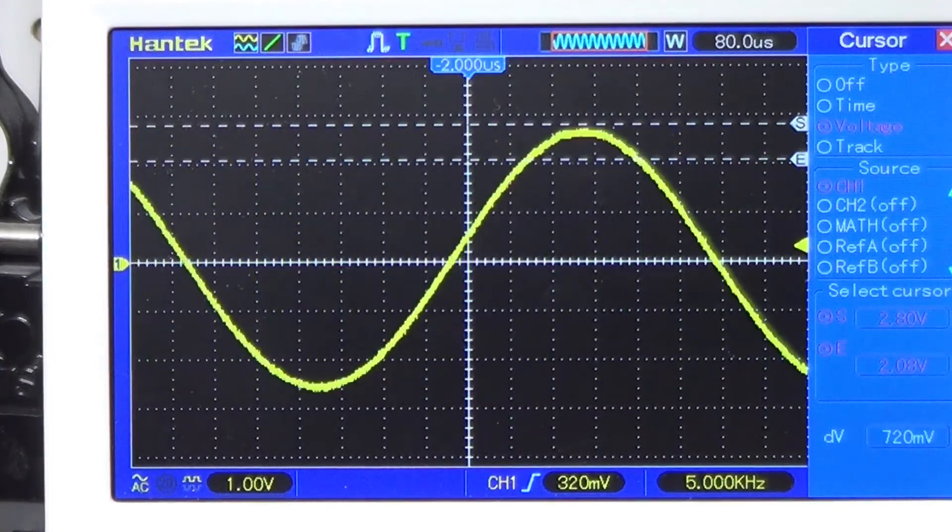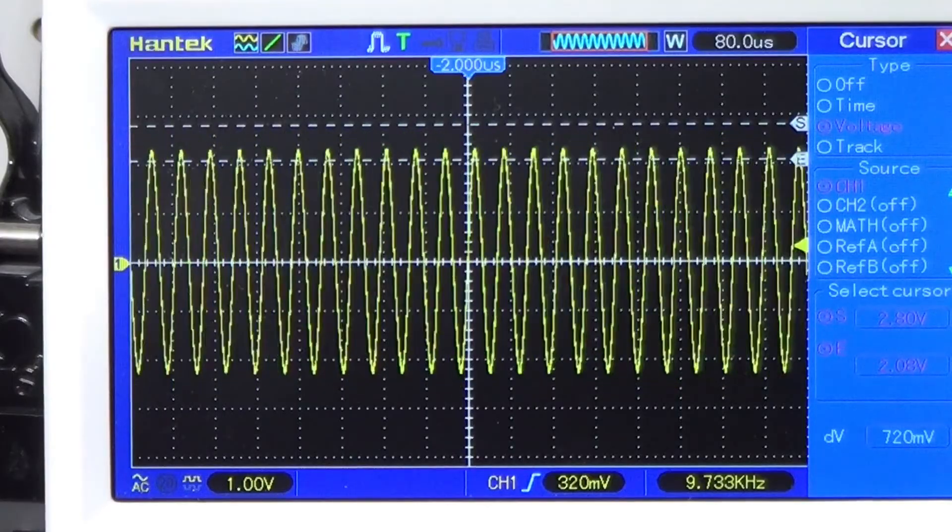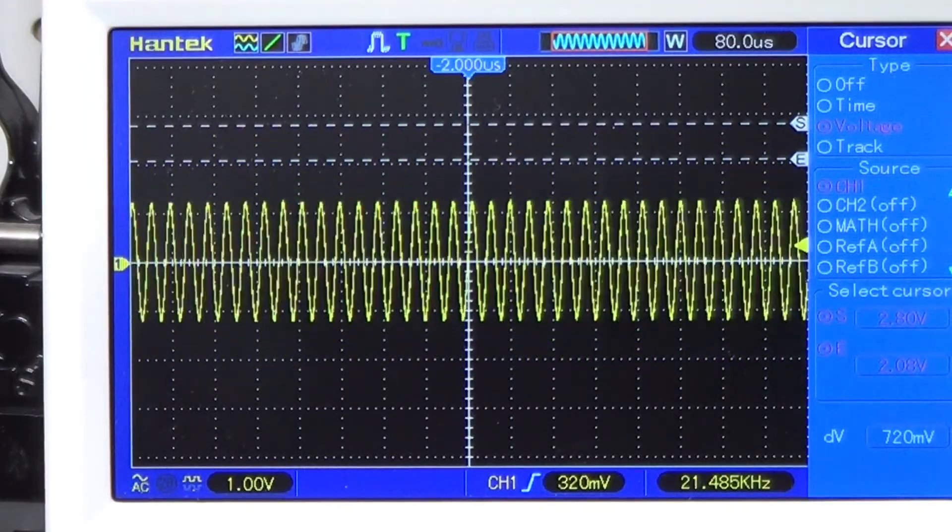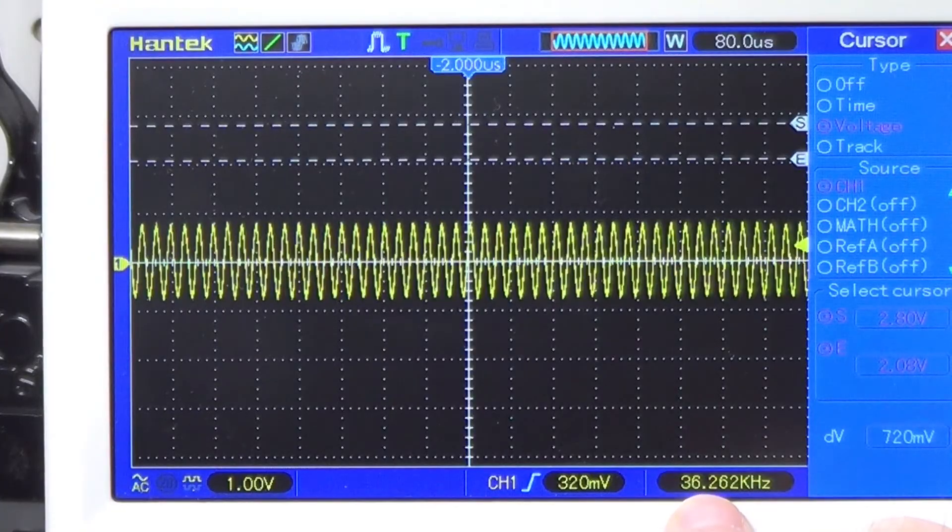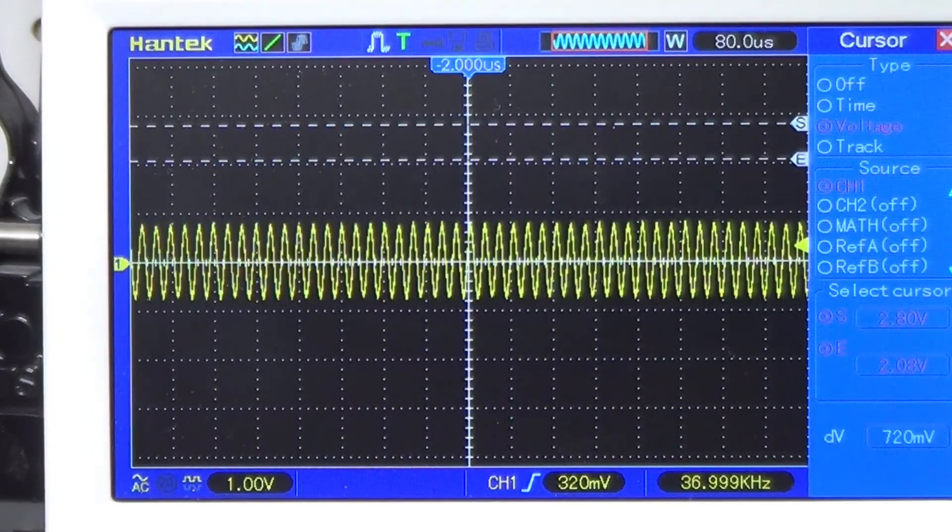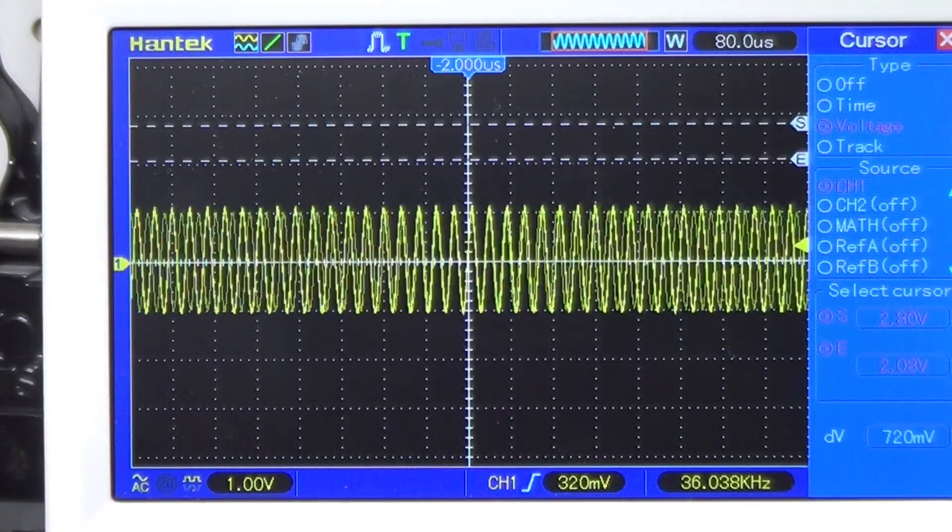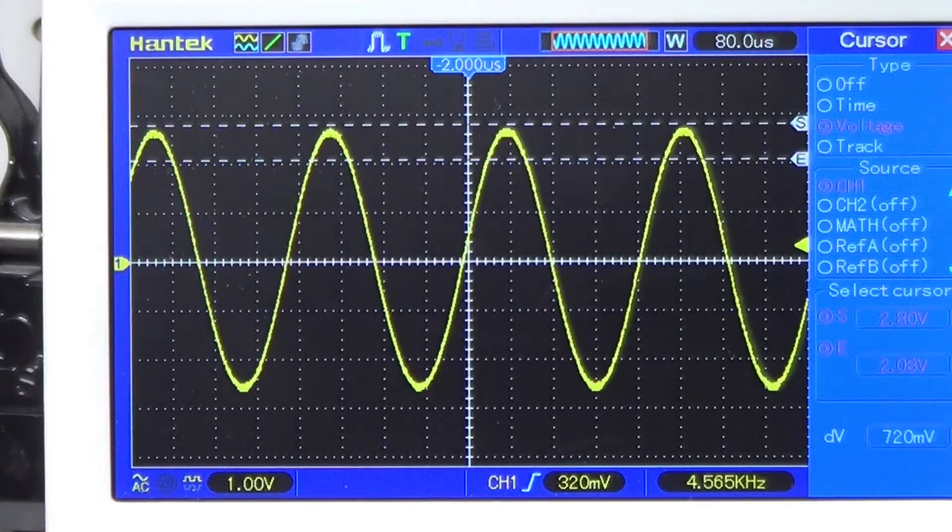And basically you see here it doesn't change anything. Going down, going up instead, the shape was decreasing because of the effect of the filter. Here for example we are at 36, 37 kHz actually. So let's go back to a lower frequency. This is a low-pass filter. So let's start from here, 3 kHz for example.